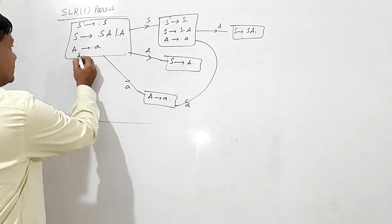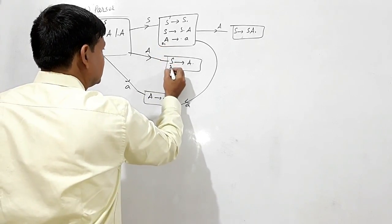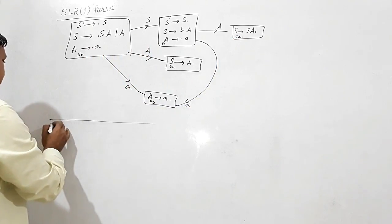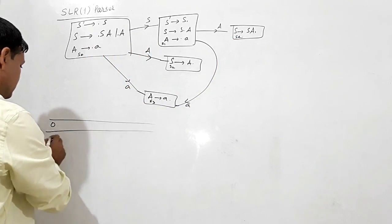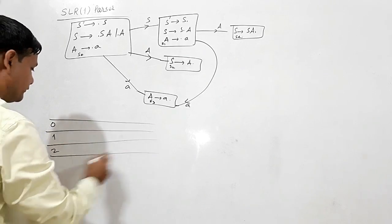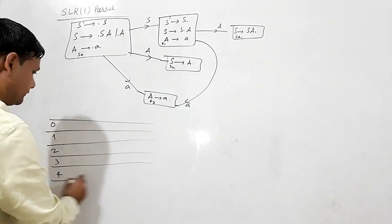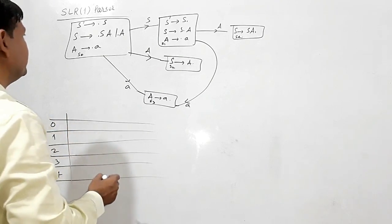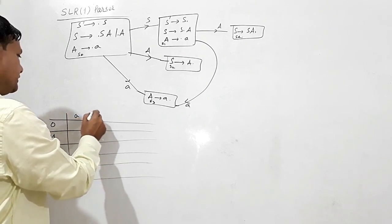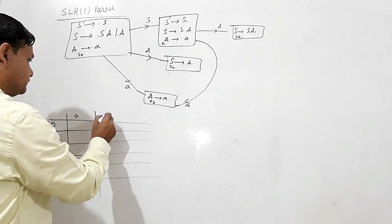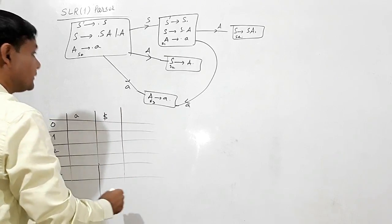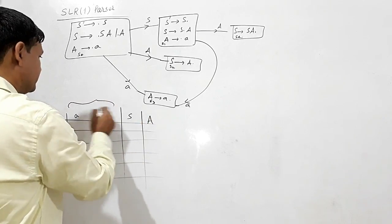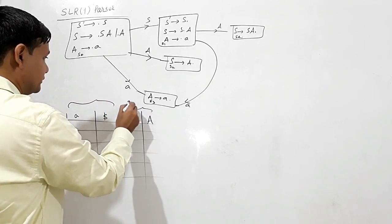The states are S0, S1, S2, S3, and S4 — five states: 0, 1, 2, 3, 4. The terminals are A and dollar only, and the non-terminals are S and A. This is the action part and this is the goto part.